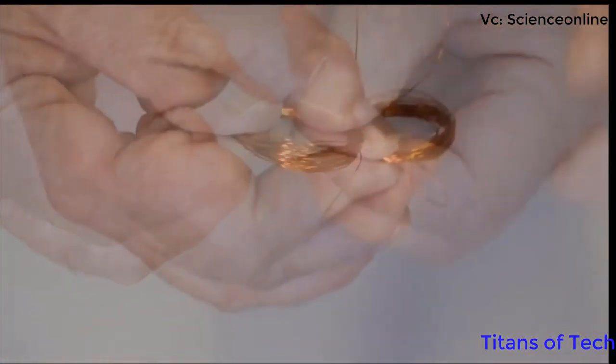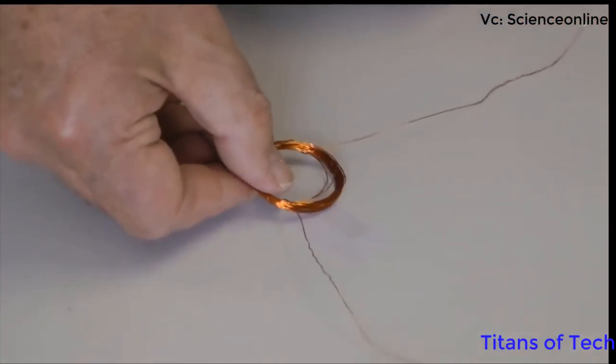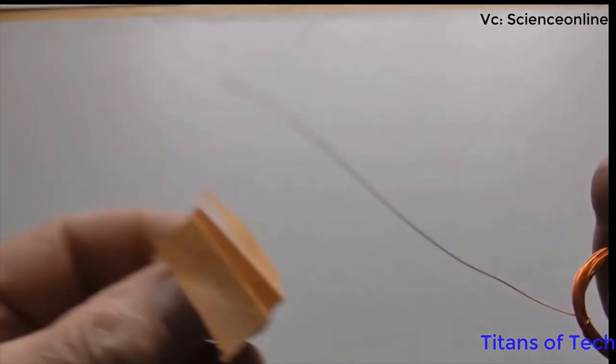I used 4 meters of 28-gauge magnet wire, a plastic cup, and a disc magnet. I wrapped the magnet wire around a 3-centimeter plastic tube, creating a coil.